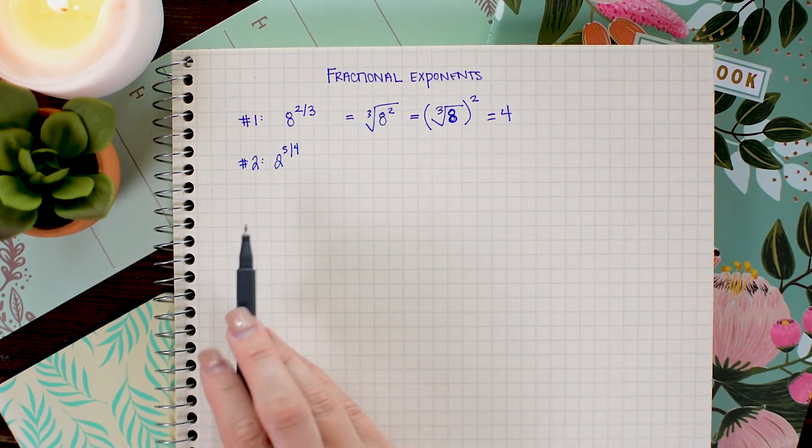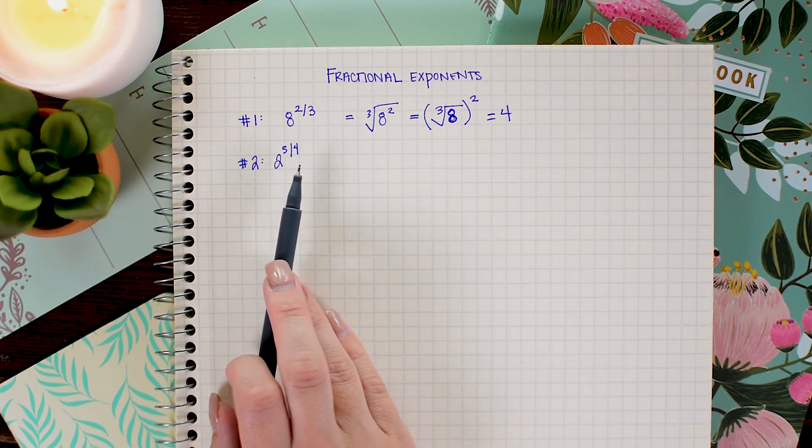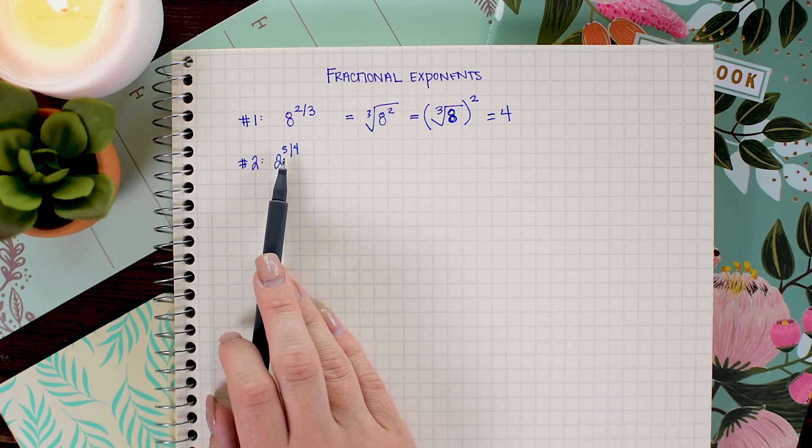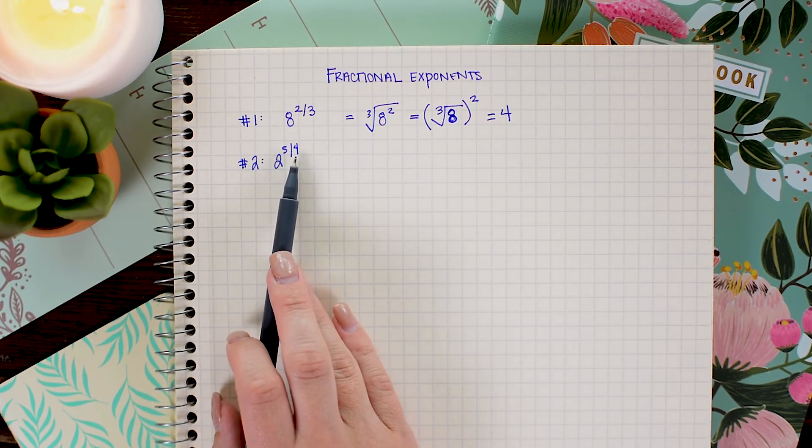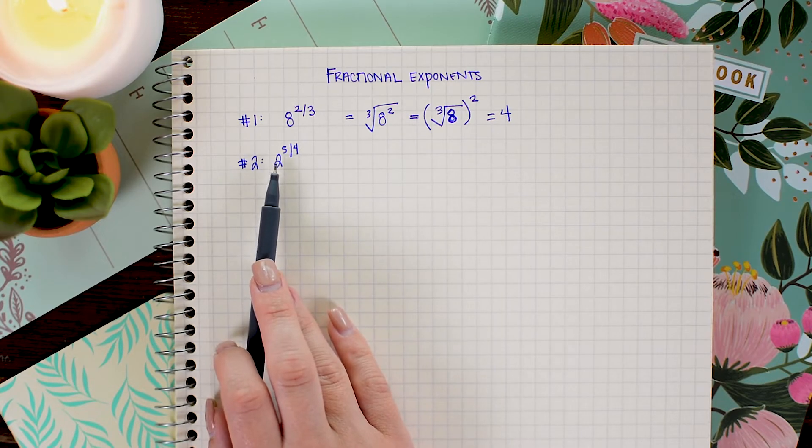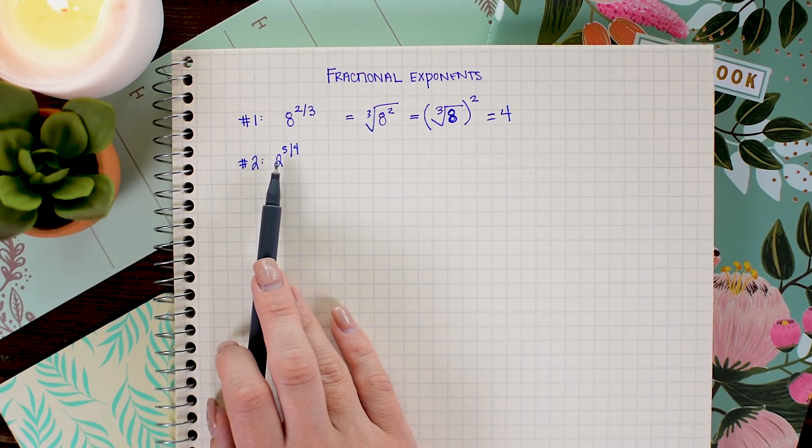Alright, in this second problem we have 2 raised to the 5 fourths power. So that means that I have 2 being raised to the 5th power, as well as a 4th root being applied to it. I could go directly into the radical notation and then try to simplify this.